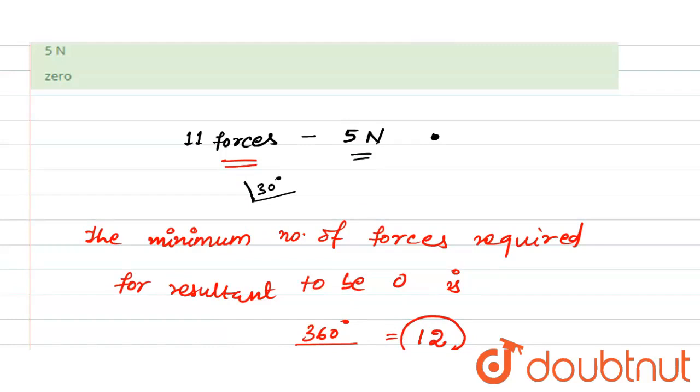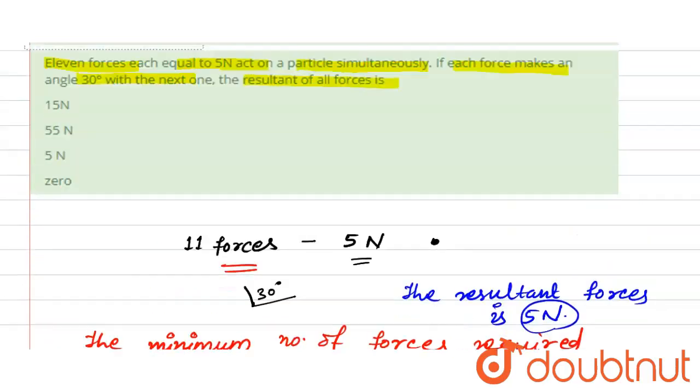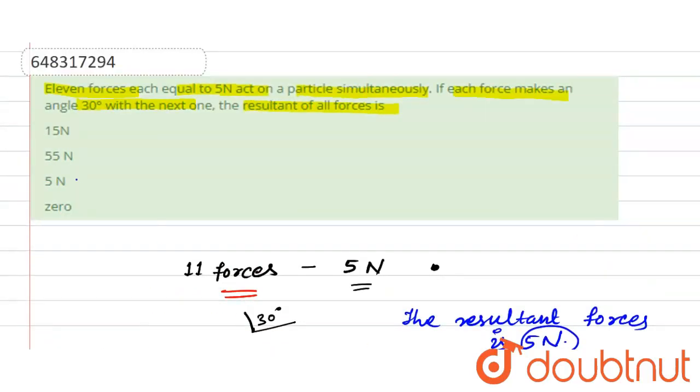Finally, the resultant force is 5 newton because 10 forces are cancelled out. The remaining one force is there, which has a value of 5 newton. So finally, the resultant of all the forces is 5 newton.